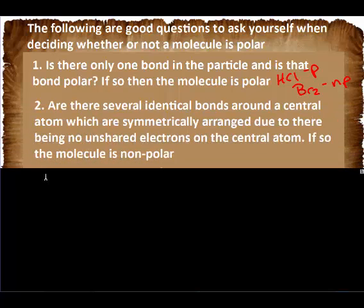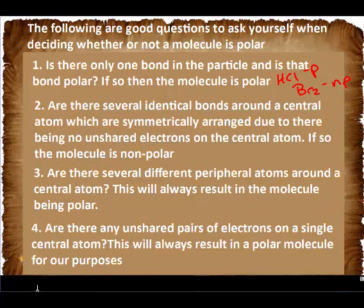Number two, let's look at number four first. Number four says, are there any unshared pairs of electrons on a single central atom? This will always result in a polar molecule for our purposes. Later in AP chemistry, you'll see some exceptions to that, but for ours, we will not be talking about those.